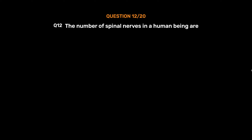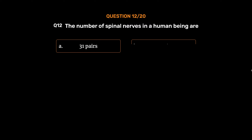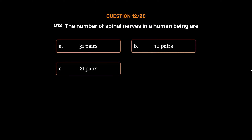Question number 12. The number of spinal nerves in a human being are: Option A: 31 pairs. Option B: 10 pairs. Option C: 21 pairs. Option D: 30 pairs. The correct answer is Option A: 31 pairs.